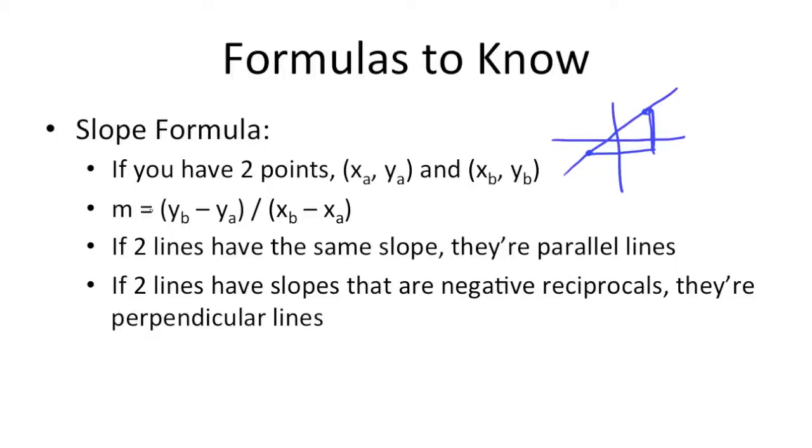Now, like with the distance formula, the ordering here doesn't matter as much as the consistency in ordering. So here you'll notice we have the yb term first. That just means we need the xb term first here in the bottom of the fraction. You could put the a term first, but that would just mean you'd need the a term first here for the x values.